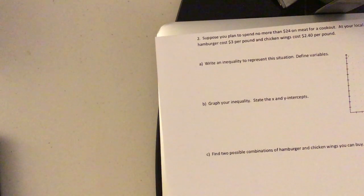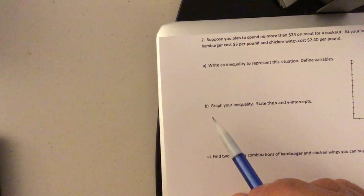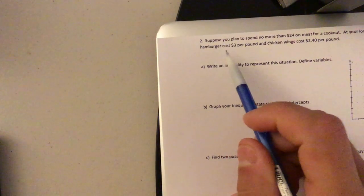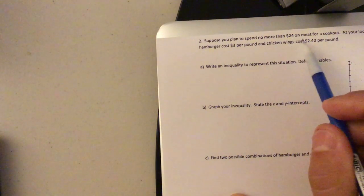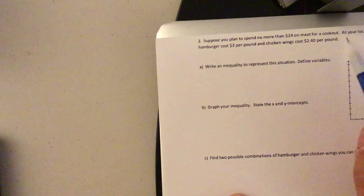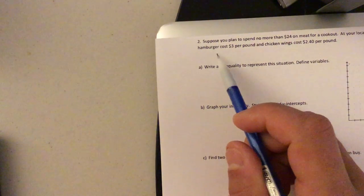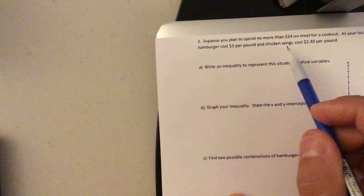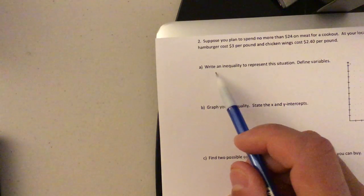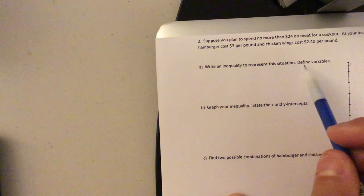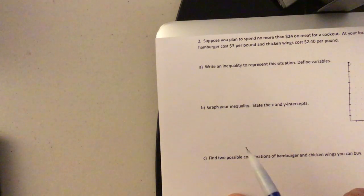Sorry about the spring as always, but this is a perfect time to grab a piece of paper, pencil, and follow along. Okay. Suppose you plan to spend no more than $24 on meat for a cookout. At your local supermarket, hamburger costs $3 per pound and chicken wings cost $2.40 per pound. Write an inequality to represent the situation. Define the variables. Okay.